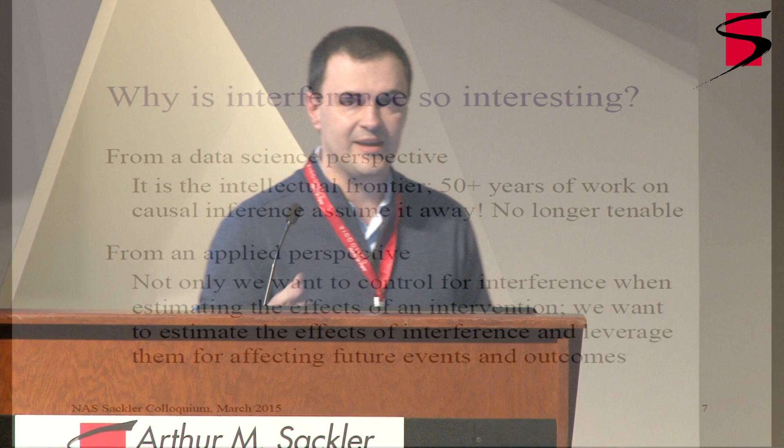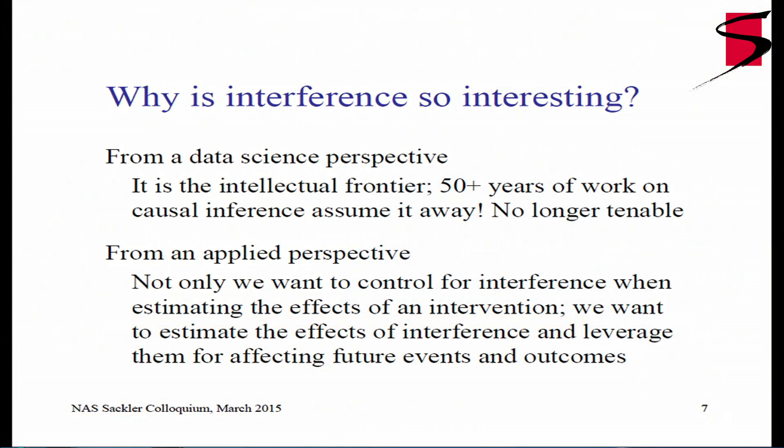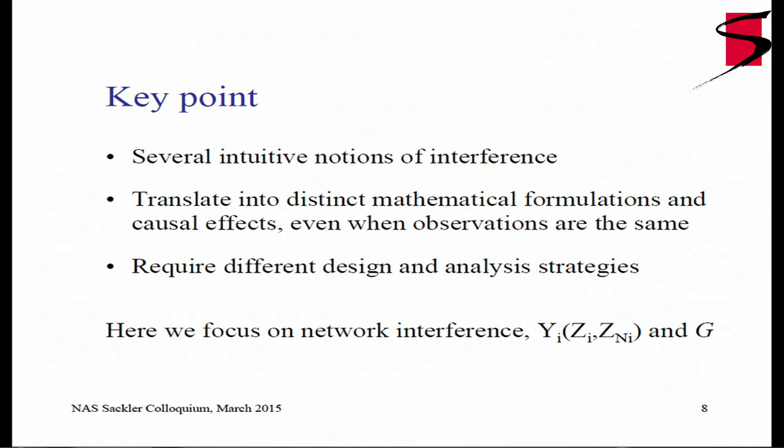Why is interference so interesting? From an intellectual perspective, it is the frontier in causal inference. For 50 years or more of work on causal inference, we assumed interference away — we weren't interested — and now this assumption is no longer tenable in the number of applications we care about. From an applied perspective, not only do we want to control for interference when estimating the effect of an intervention, but we want to estimate the effect of interference and leverage these effects for affecting future events and outcomes. Once you understand the causal mechanism, you can leverage it.